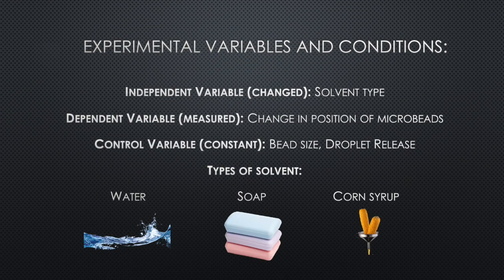In our experiment, we tested how the variations in solvent types affected how the microbeads moved. Our independent variable that changed was the solvent type: water, soap, and corn syrup. Our dependent variable that was measured was the location of a microbead over a 30-second interval. We kept the bead size and droplet release the same.